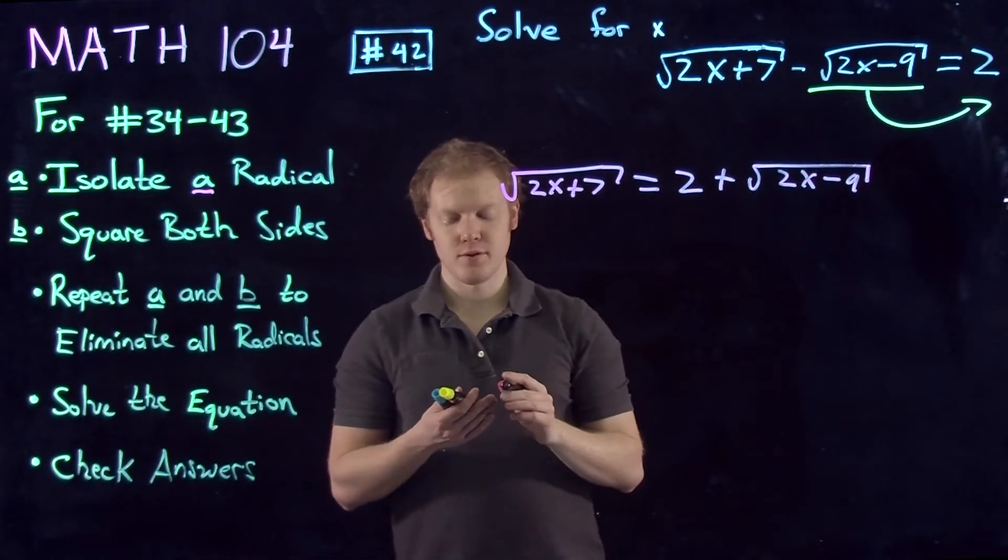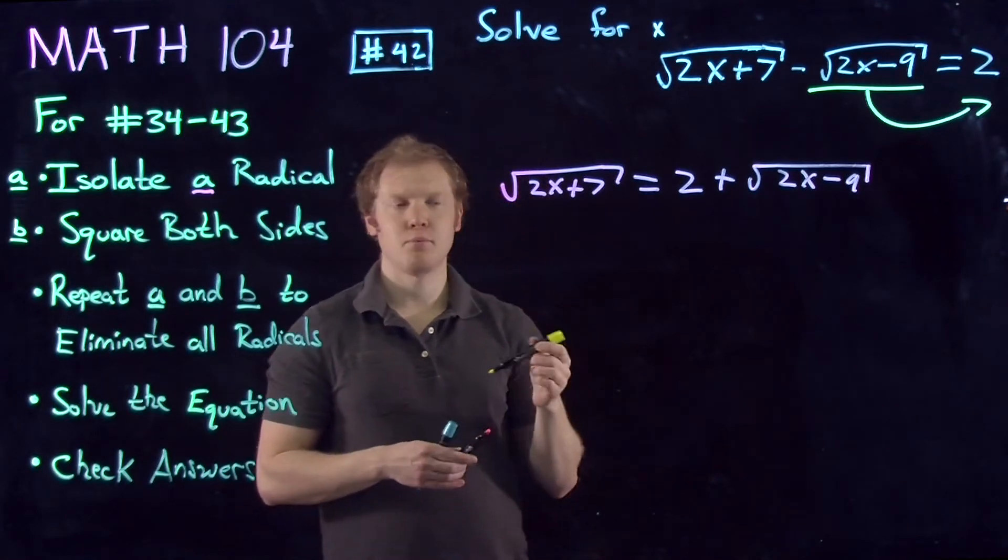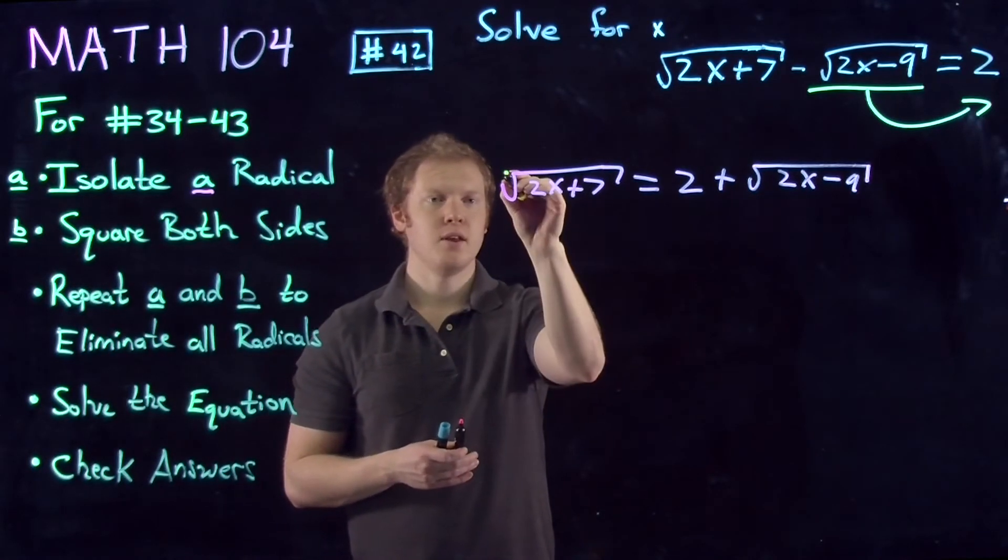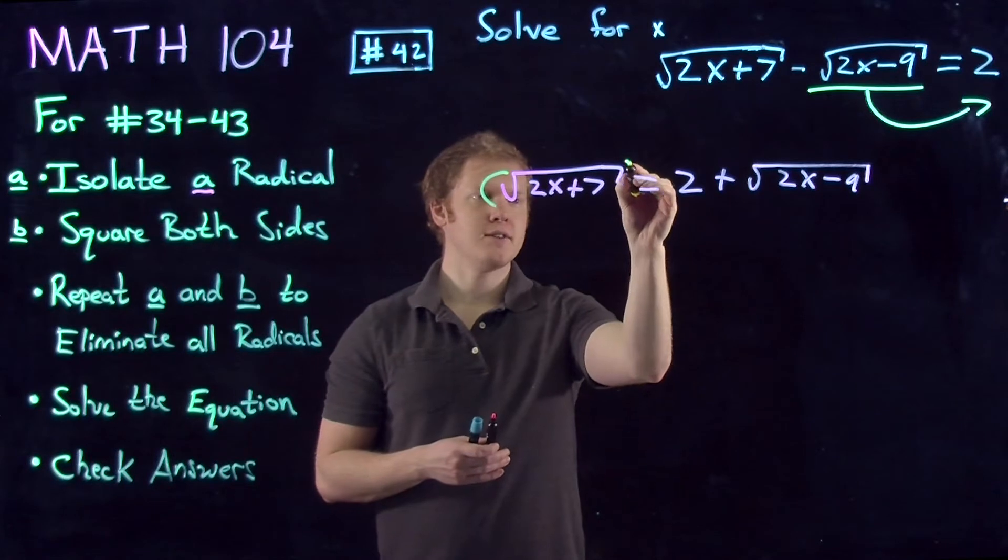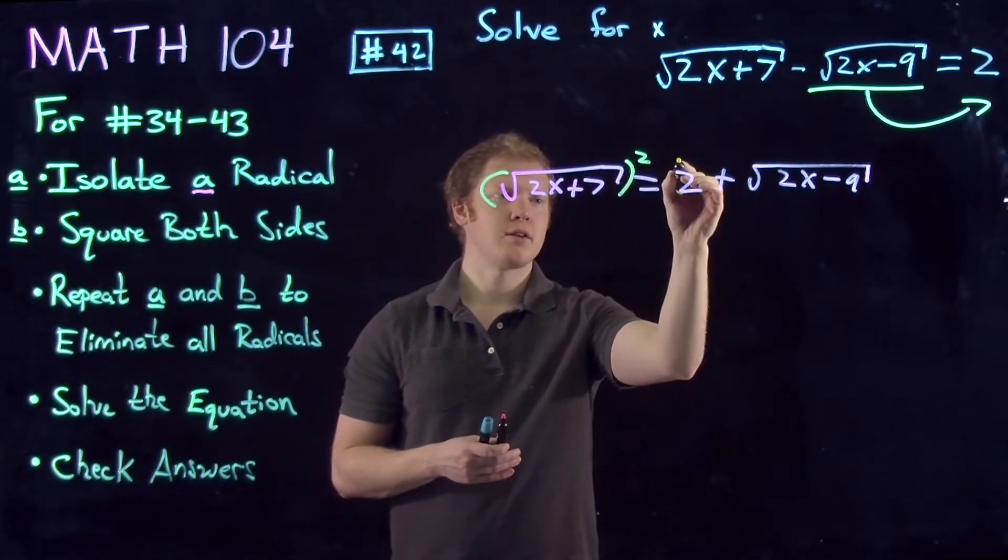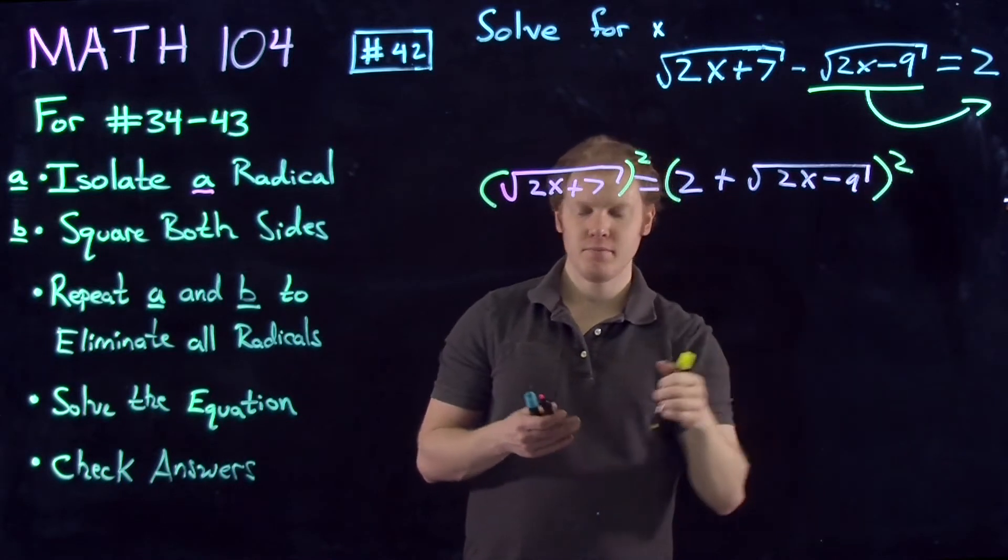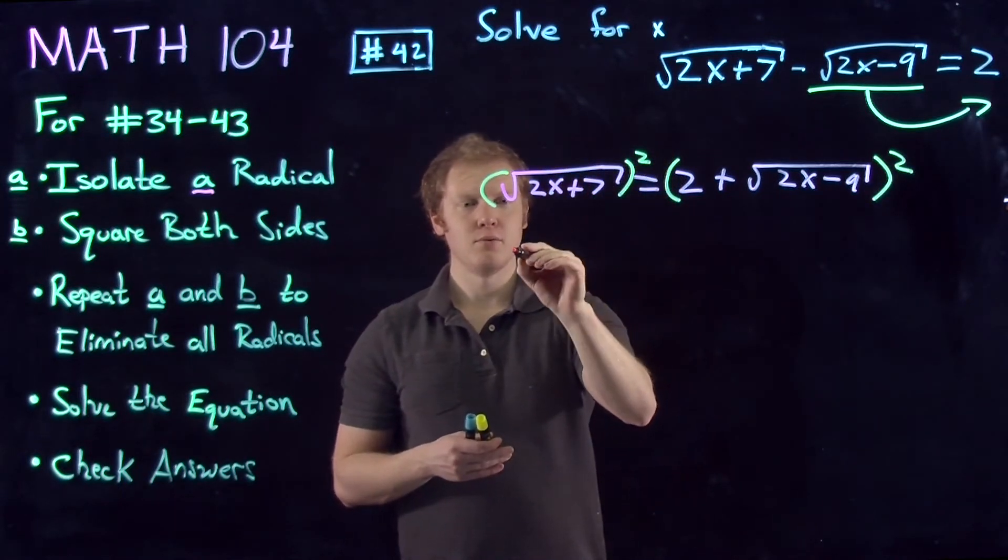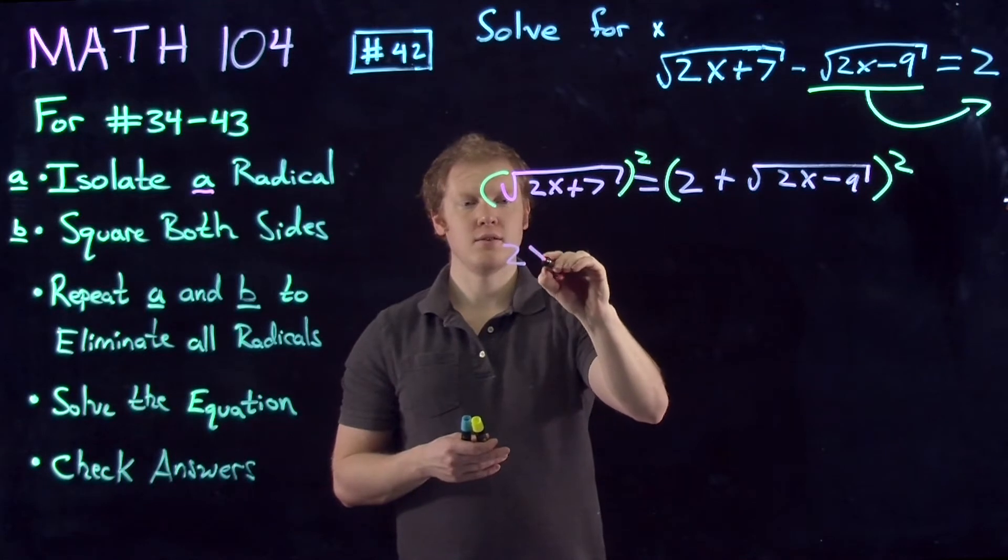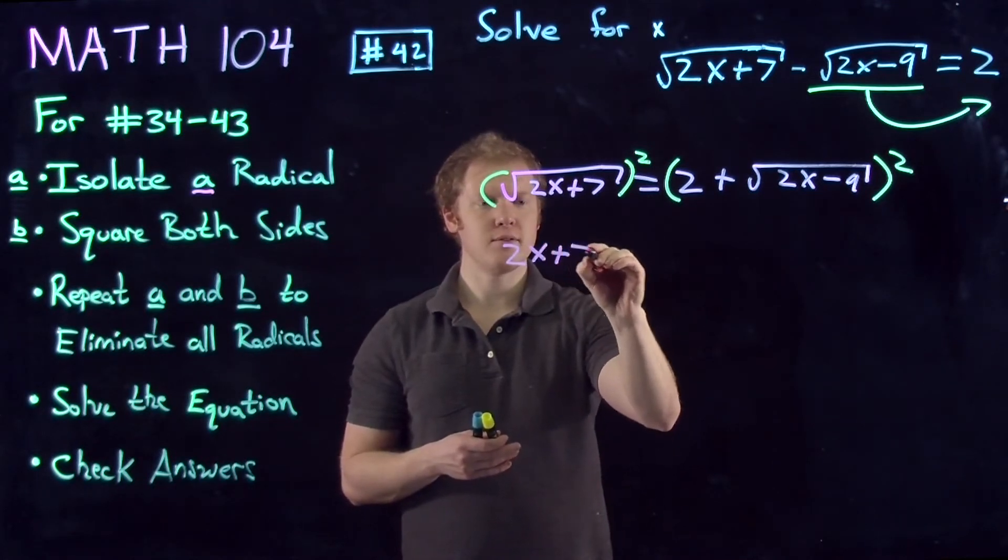Next we move on to step B: square both sides to eliminate a radical, which gives us this expression. On the left-hand side, we will just get the quantity 2x plus 7.